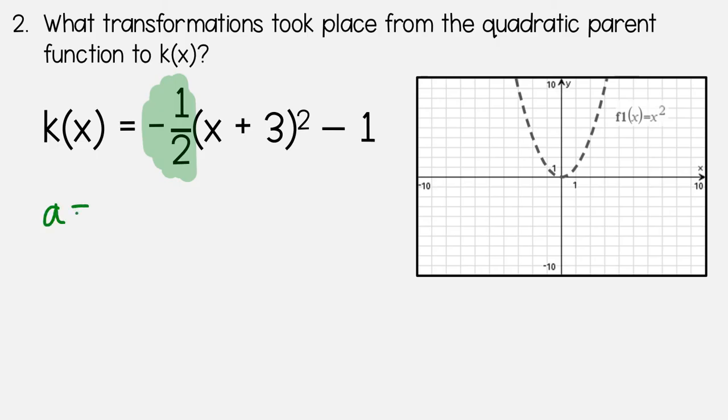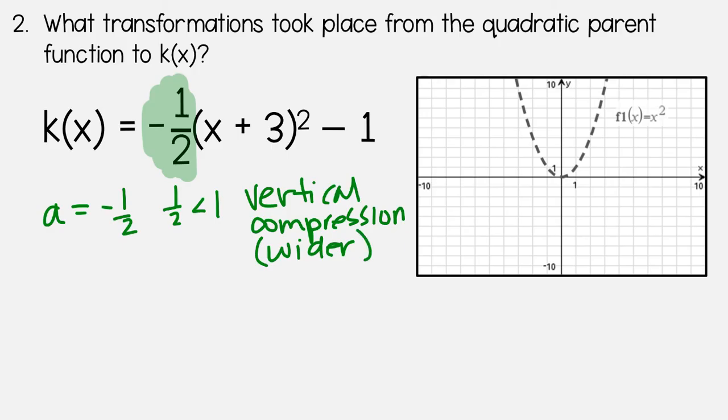So let's think about this. a is equal to negative 1 half. So because 1 half is less than 1, that's going to be a vertical compression. Which means that our graph is going to be wider than normal. But the other thing is that a is negative. So that means that we're going to reflect it over the x axis and it's going to look upside down.